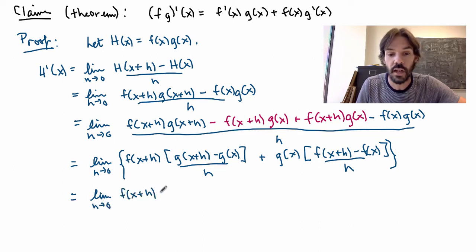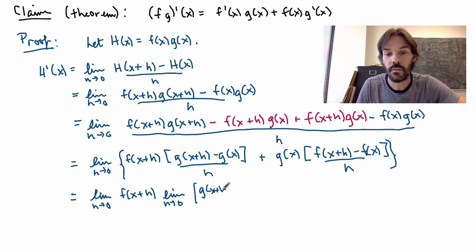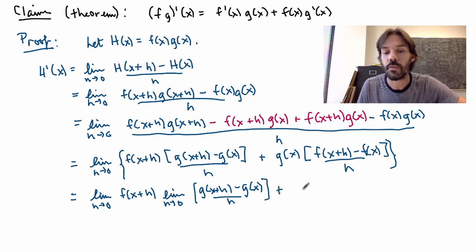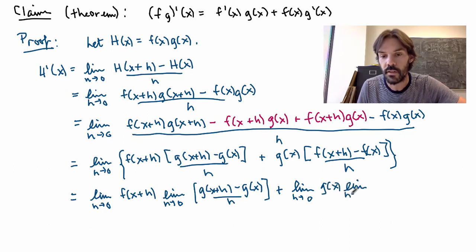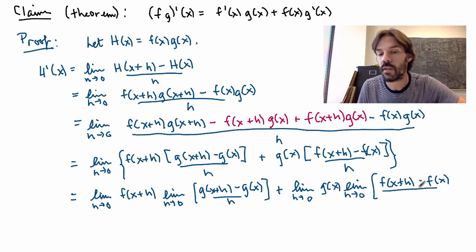times the limit as h goes to zero of this thing here, which is g of x plus h minus g of x divided by h. And for the second term I also get the product of two limits. Limit as h goes to zero of g of x times the limit as h goes to zero of what remains, which is f of x plus h minus f of x, whole thing divided by h.